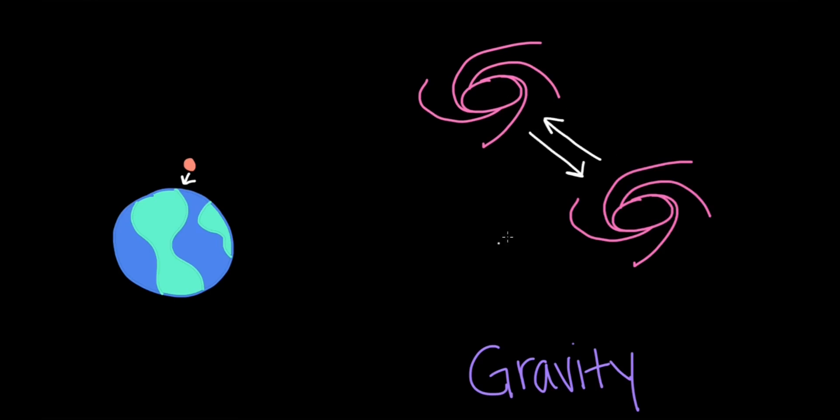Now, the strength of this pull depends on two things. First is the mass of both objects. So as either object gets more massive, the strength of gravity increases.